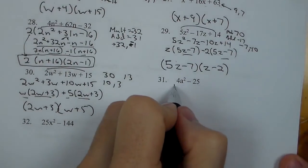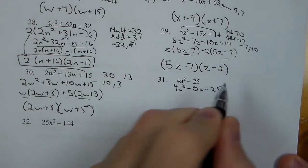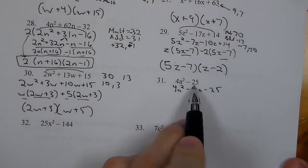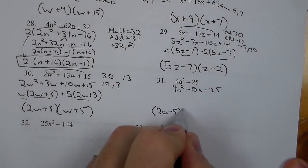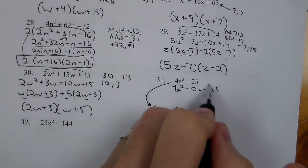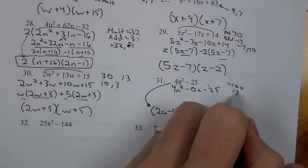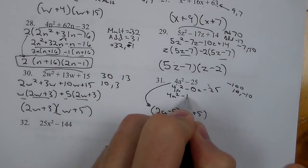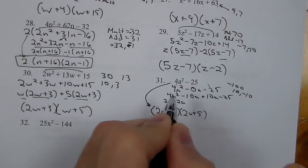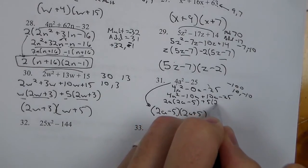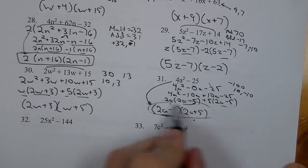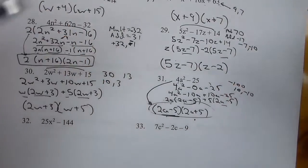Number 31: 4a squared minus 25 — we can think of it as 4a squared plus 0a minus 25, multiplying to negative 100 and adding to 0. But it's also the difference of two squares, so we take the square roots: 2a minus 5 times 2a plus 5. Let's verify with the regular method: negative 10 and positive 10 split the middle; 4a squared minus 10a plus 10a minus 25; factor 2a out to get 2a minus 5, factor 5 out to get 2a minus 5. Same answer. You can put a 0a in and get there either way.